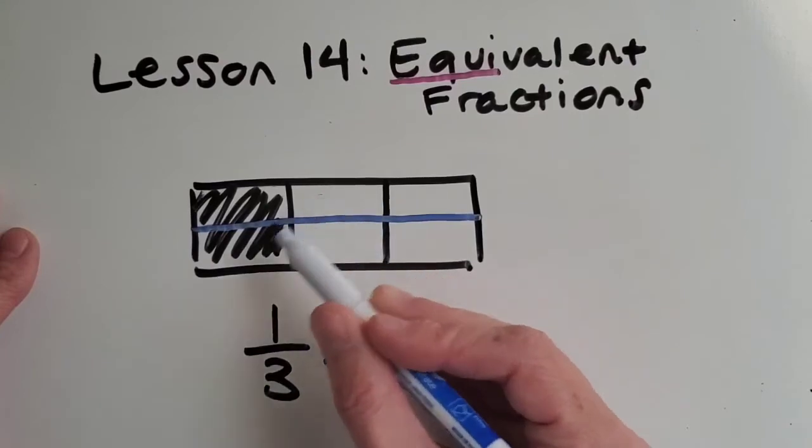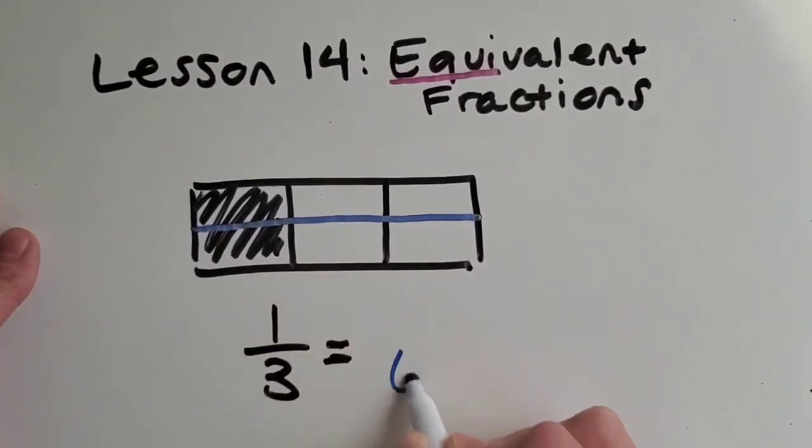Then how many pieces do I have? What denominator do you see? One, two, three, four, five, six. I've got sixths. Okay, so now how many pieces are shaded? Good, two.